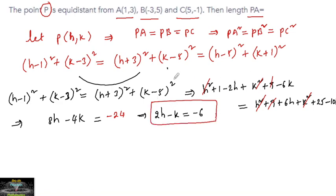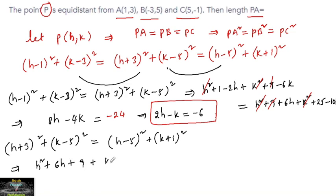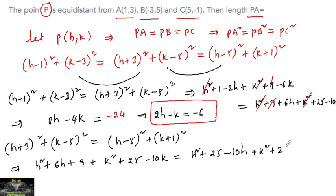Now let us consider the next two expressions. (h+3)² + (k−5)² = (h−5)² + (k+1)². Expanding: h² + 6h + 9 + k² + 25 − 10k = h² + 25 − 10h + k² + 2k + 1.